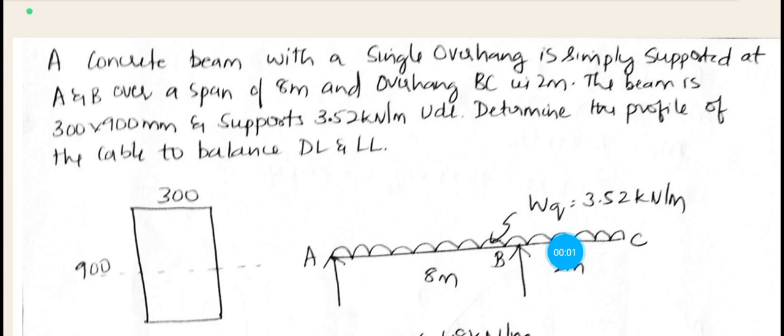A concrete beam with a single overhang is simply supported at A and B over a span of 8 meters, and overhang BC is 2 meters. The beam is 300 by 900 mm and supports 3.52 kN per meter UDL. Determine the profile of the cable to balance dead load and live load.